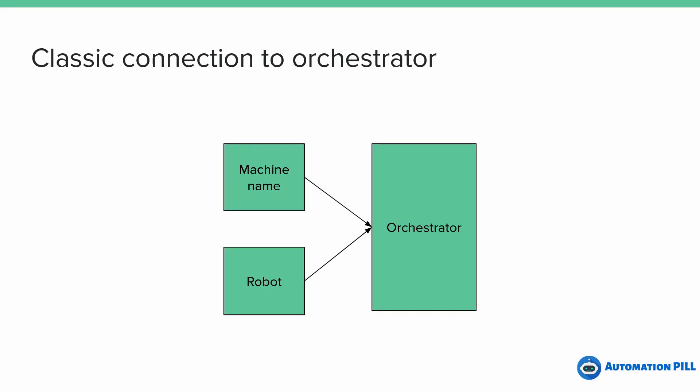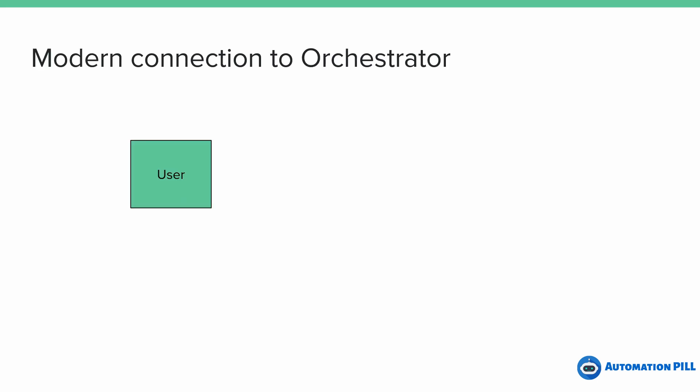There are two methods to connect the robot to the Orchestrator. The one you probably know required adding the machine name and the robot to the Orchestrator, and based on those two settings the robot is identified. The new one, called modern, works using the browser.